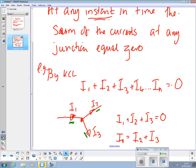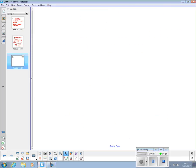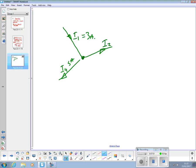Is everybody happy so far? So, let's have a look at an example of how we might use that problem. There's a junction. I1, 3 amps, I4, 5 amps, I2 unknown, I3 is 4 amps.